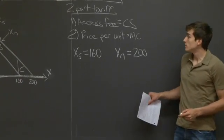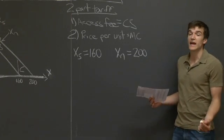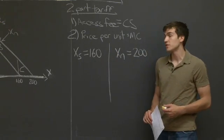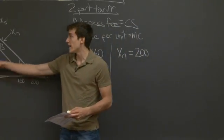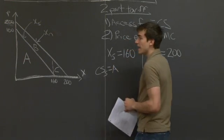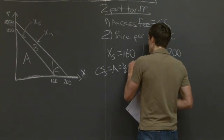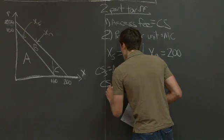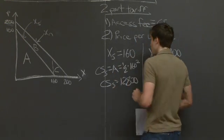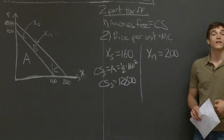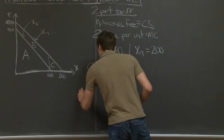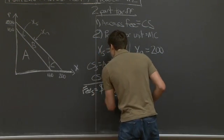For part B, we know we charge a price per unit equal to zero. We just need to calculate the access fee for each group. The access fee for students with a 160-song bundle is the area of triangle A, which equals one-half times 160 squared, giving us 12,800 cents. Since prices are given in cents, the fee for students is $128.